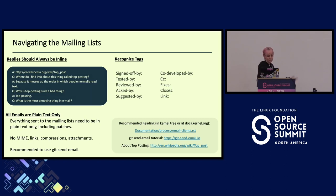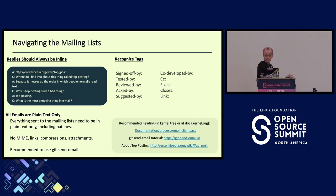Co-developed-by is used when two people worked on a patch — whoever submits it puts their signed-off-by and then adds co-developed-by. CC is a great way to add an email for someone who should stay in the loop anytime anything happens to that patch. The fixes tag always references a prior patch if it's fixing it — very useful in the git log to see if fixes already exist. Closes and link references either bugs or mailing list communication.